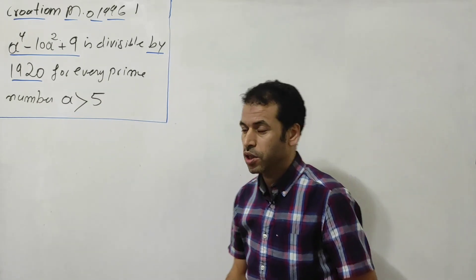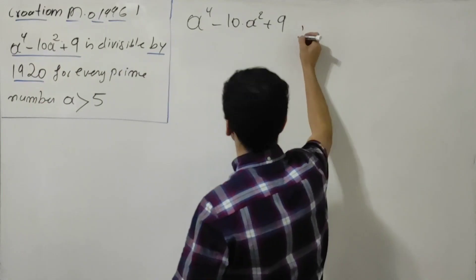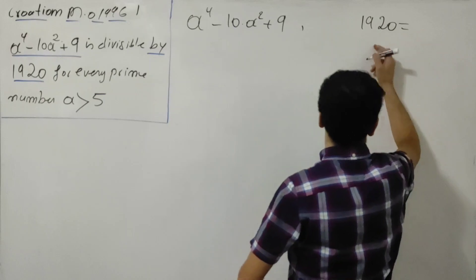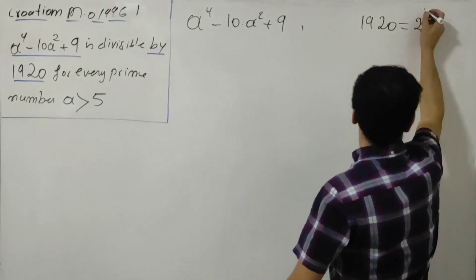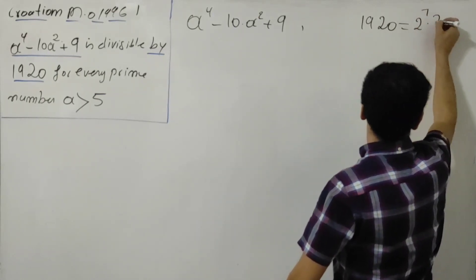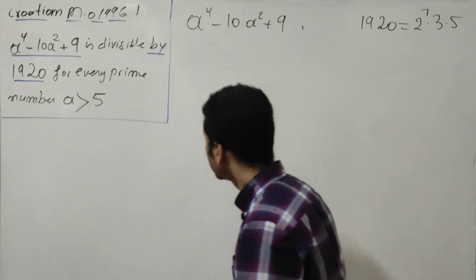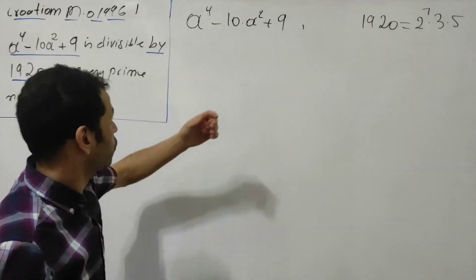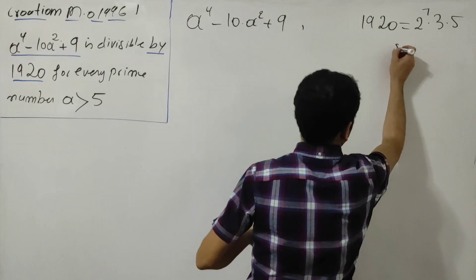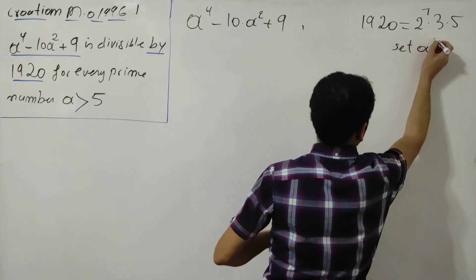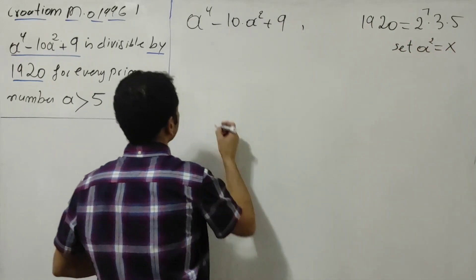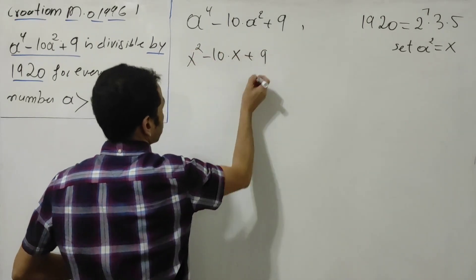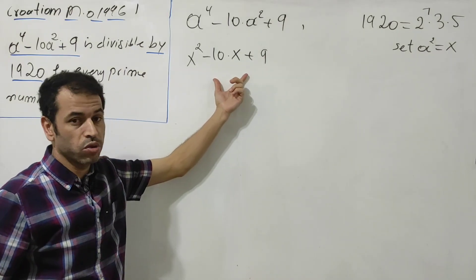Let's get into the solution. We have this term and also 1920. Now 1920 can be written as two to the seventh, multiplied by three, multiplied by five. The first thing I'm going to do is factor out this term. To do that, I'll set e squared equal to capital X, so I will have X squared minus ten times X plus nine. This term is reduced to quadratic form, which makes it simpler to factor.